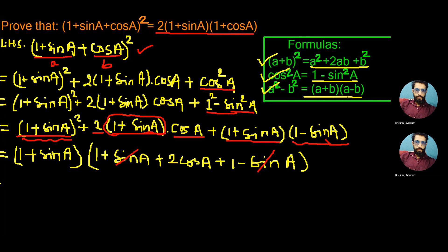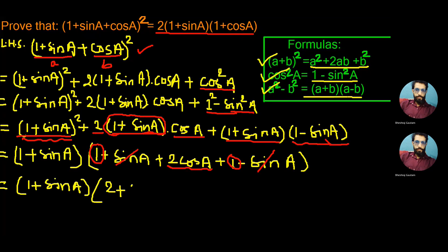Now we continue this as one plus sine A in the first bracket — the same — and when we add the ones, it will be 2, and the remaining is 2 cos A, so we write 2 cos A here.